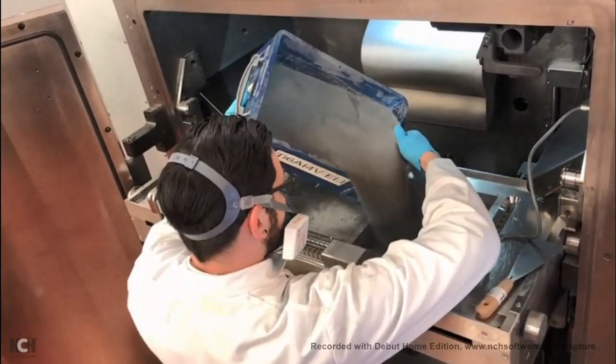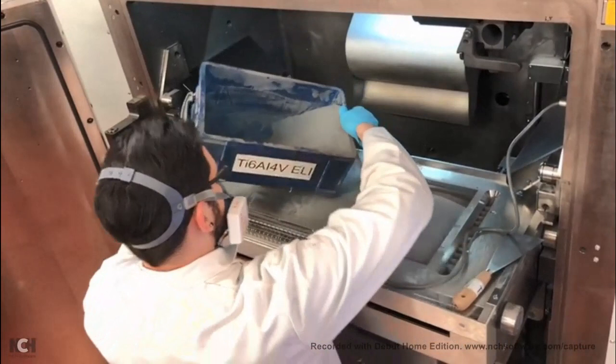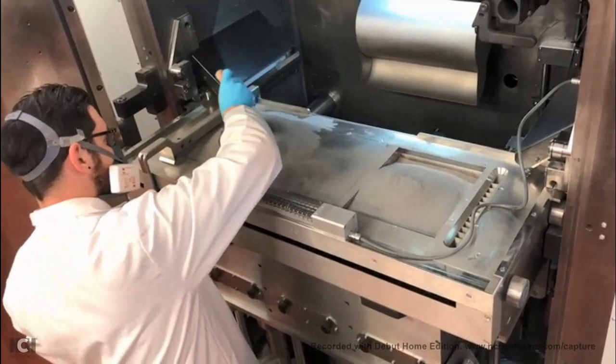Before printing, the machine has to be filled with the raw material, the metal powder. Here you can see the operator first pouring the powder from a box into the different feeding chambers, and then leveling it with a spatula, pressing it down to compact it, and spreading it evenly on the top.